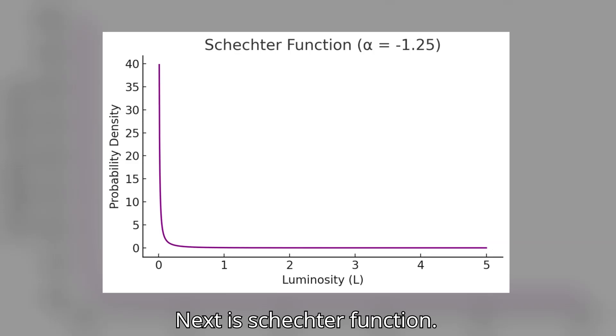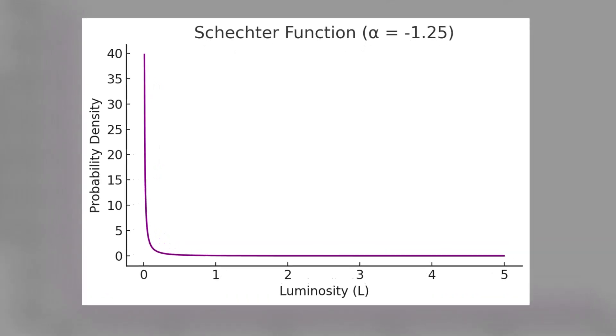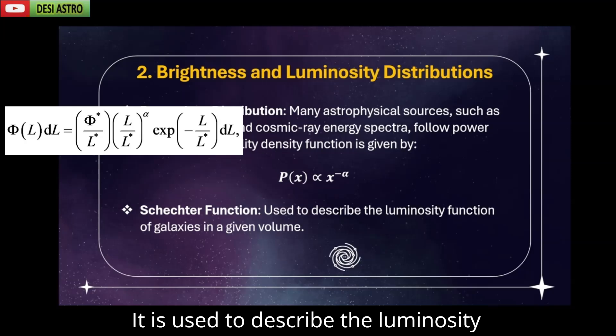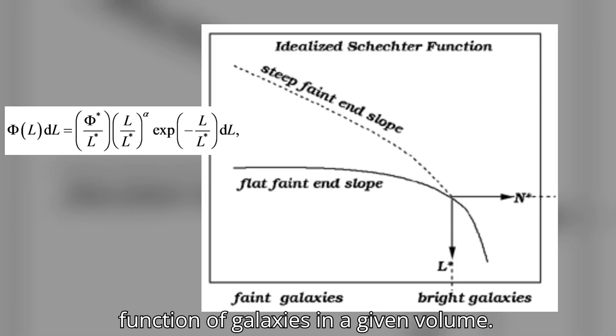Next is Schechter function. It is used to describe the luminosity function of galaxies in a given volume. It is used to describe the number densities of galaxies per unit luminosity.